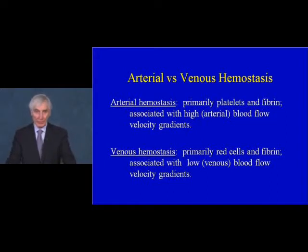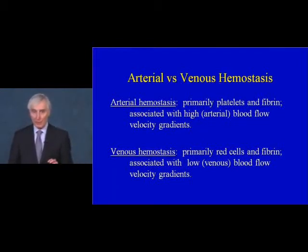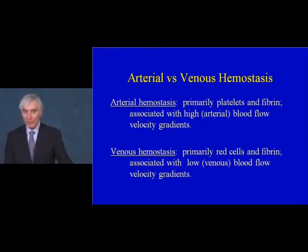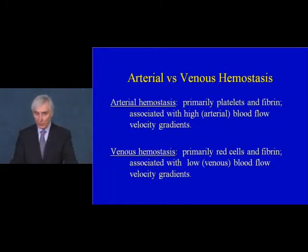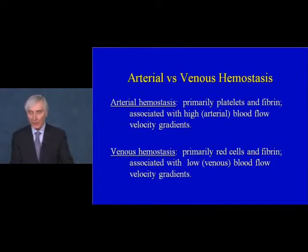There is an important distinction between what goes on in arteries versus veins. In arterial hemostasis, one sees principally platelets and fibrin, associated with high arterial-like blood flow velocity gradients. Venous hemostasis involves very few platelets and is primarily red cells and fibrin, associated with low venous blood flow velocity gradients. These represent extremes of a continuum with a spectrum in between.